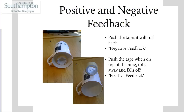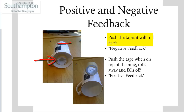If you push the tape inside the mug in the picture, the tape will roll a bit but move back into the centre of the mug. That's known as negative feedback, because the tape resists what you're trying to do to it.